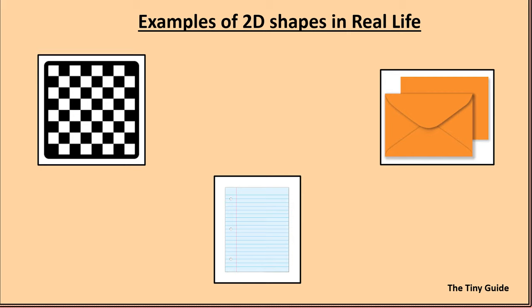Some examples of 2D shapes in real life are chessboards, envelopes, papers, etc.